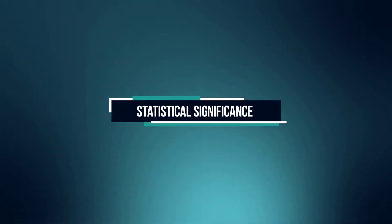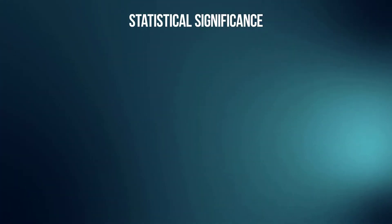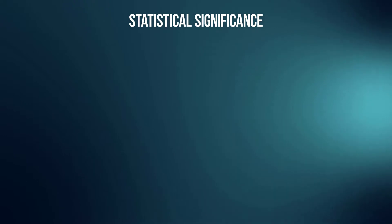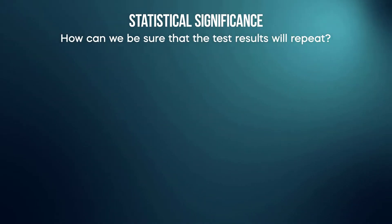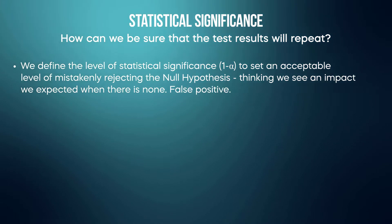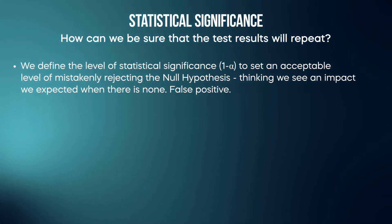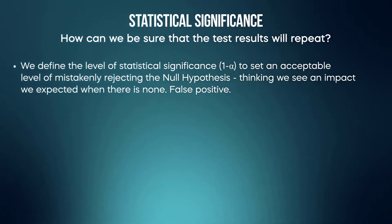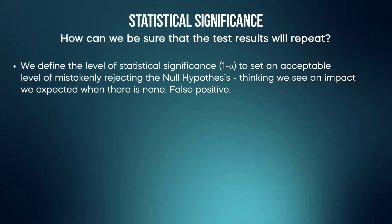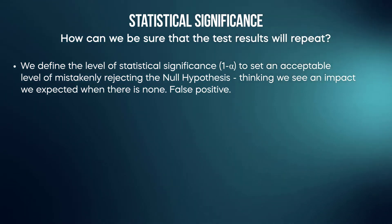Let's talk about what statistical significance is. Statistical significance allows us to answer the question of how we can be sure that test results will repeat. We define the level of statistical significance as 1 minus alpha to set an acceptable level of mistakenly rejecting the null hypothesis — thinking that we see an impact when there is no impact. This is called a false positive.